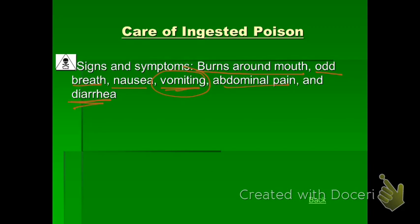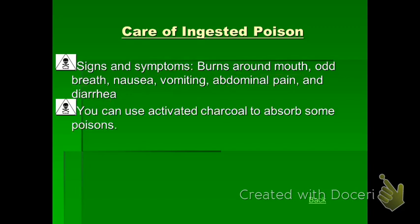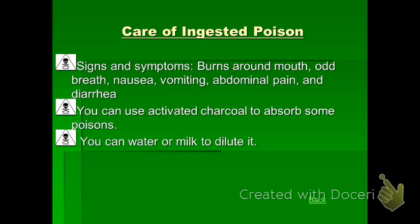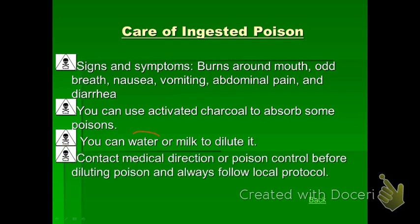To care for ingested poison: use activated charcoal — an over-the-counter agent the patient drinks that absorbs the majority of the poison, much like bread soaks up fluids. You can also use water or milk to dilute the poison and facilitate excretion via urination. Always call 911 or the Poison Control Center before diluting the poison, and follow local protocol.